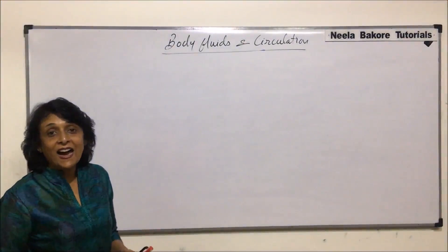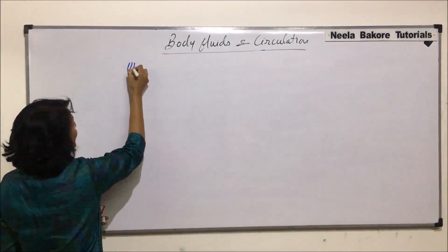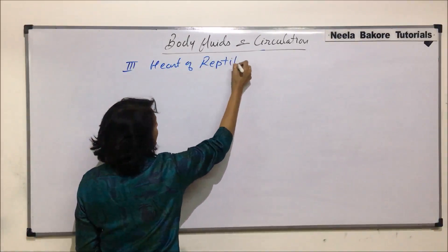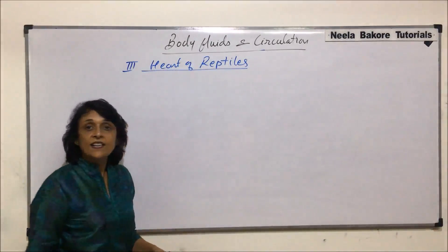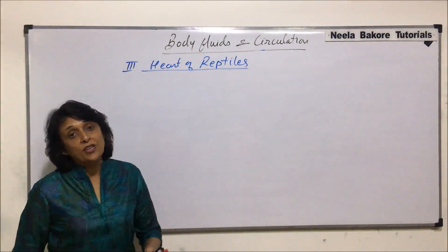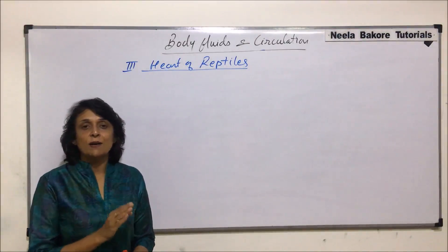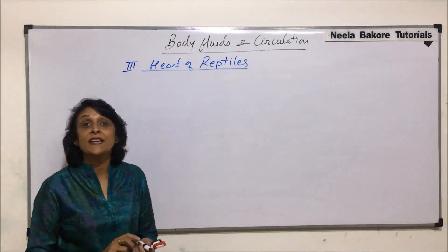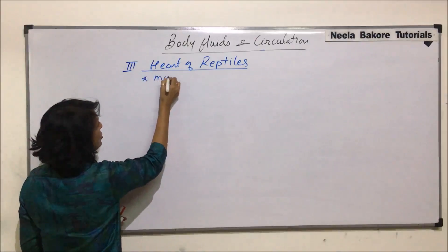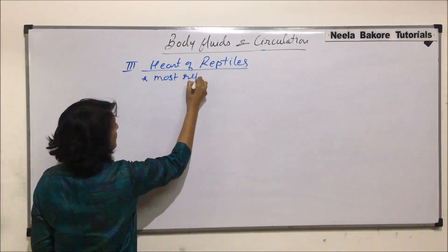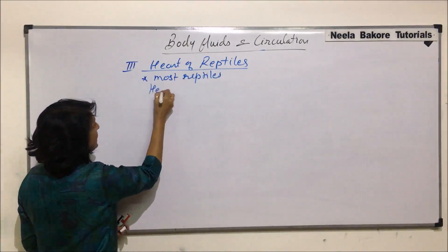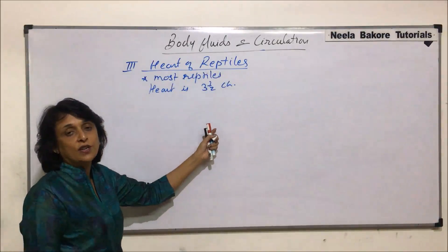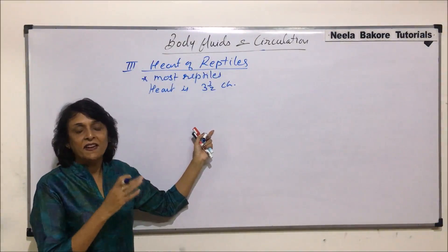Let us now talk about the heart of reptiles. The reptilian heart is also three-chambered, but there is a partial compartmentation of ventricles. And that is why instead of calling it three-chambered, we call it three-and-a-half-chambered. So in most reptiles, the heart is three-and-a-half-chambered. Once we draw the structure, we will understand why we are calling it three-and-a-half.